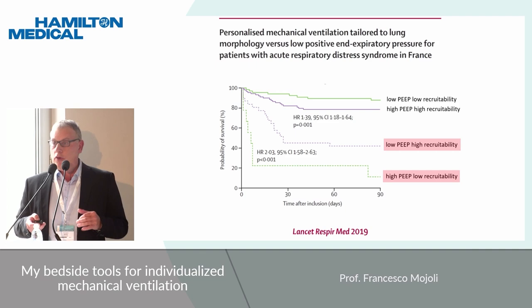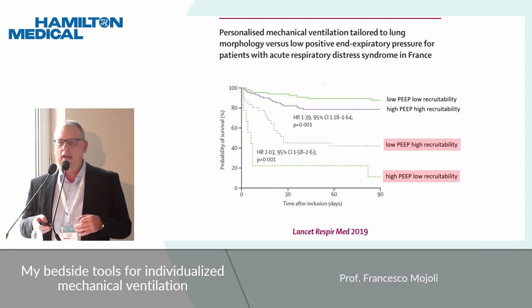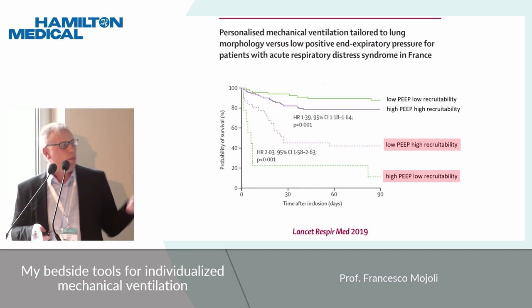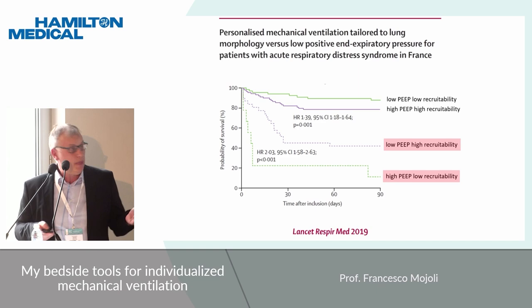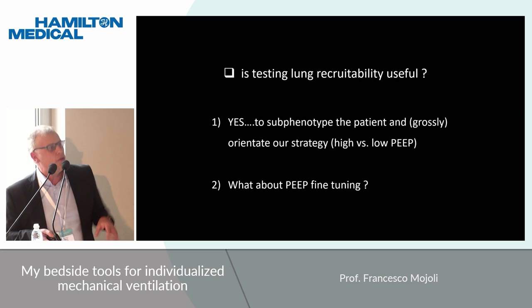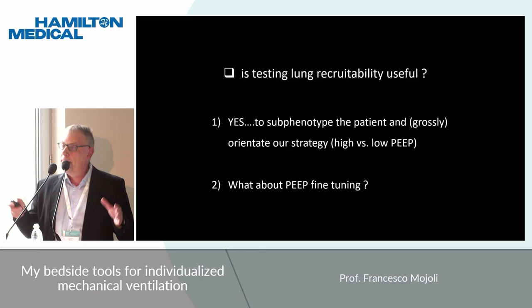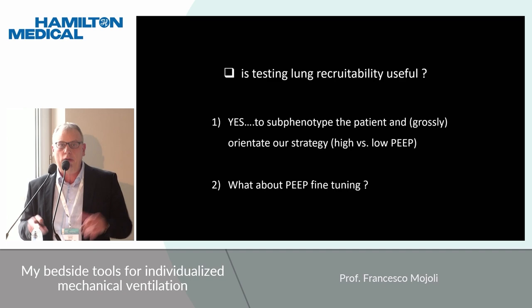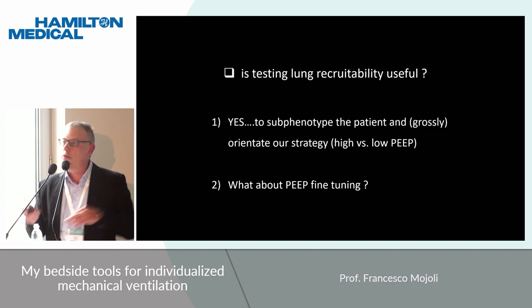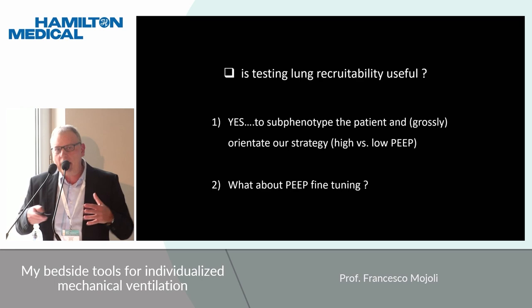Is this useful to know at the bedside? To split our patient into high and low recruitability conditions? For sure yes, because it seems that our patients appreciate that we set PIP according to recruitability. When we do not, it is a problem, because if we set low PIP in a high recruitable patient or high PIP in a low recruitable one, the outcome is very poor. The answer is yes, especially at the very beginning after intubation, just to split your patient into high or low recruitable and to grossly orientate your strategy toward a high versus low PIP strategy.